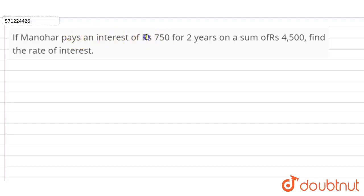Manohar pays an interest of rupees 750 for 2 years on a sum of rupees 4500, find rate of interest. So it is not mentioned in the question that it is simple interest or compound interest. When this is not mentioned in the question, we take it as simple interest, right? Simple interest.